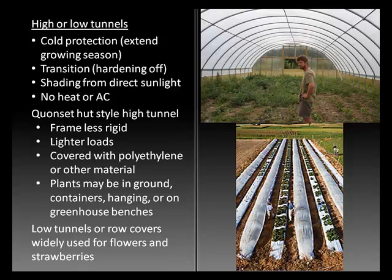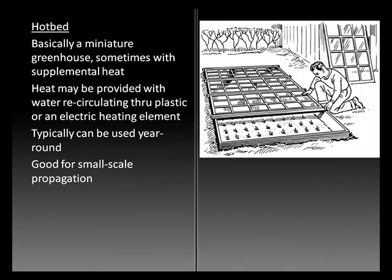Low tunnels and row covers are widely used for ornamentals, flowers, and strawberry production. In some areas, vegetables such as tomatoes are grown under tunnels. A hotbed is basically a miniature greenhouse, sometimes with supplemental heat, but normally the heat is provided by sunlight striking the glass and heating the soil below. Hotbeds and hothouses are good for small-scale production but are rarely used in commercial plant propagation.